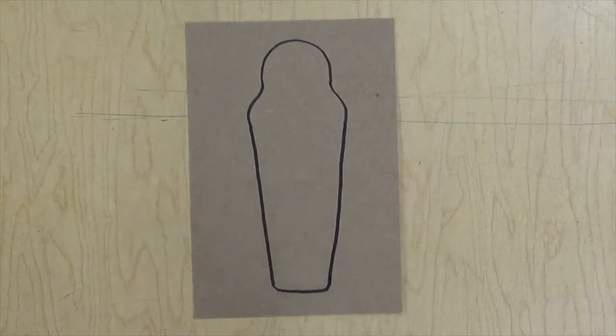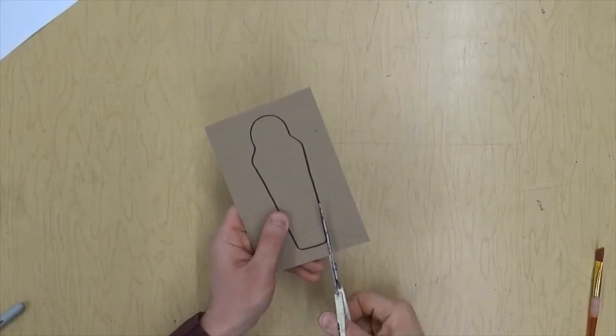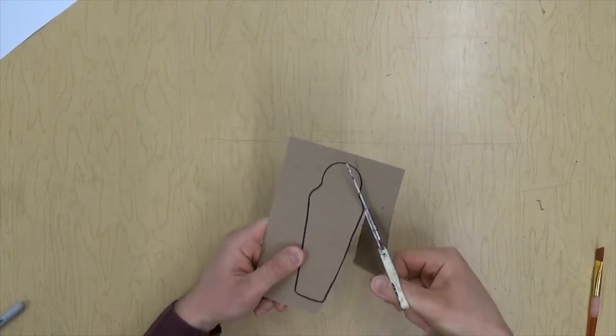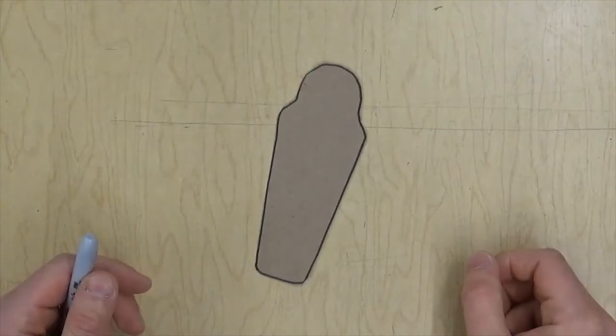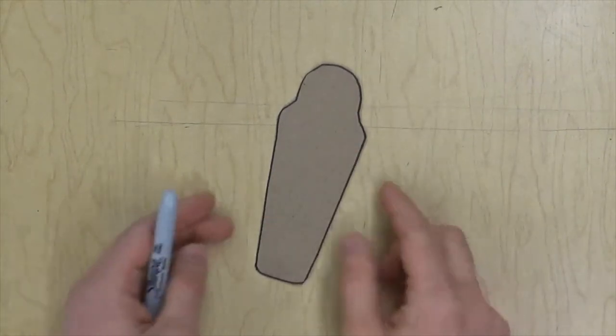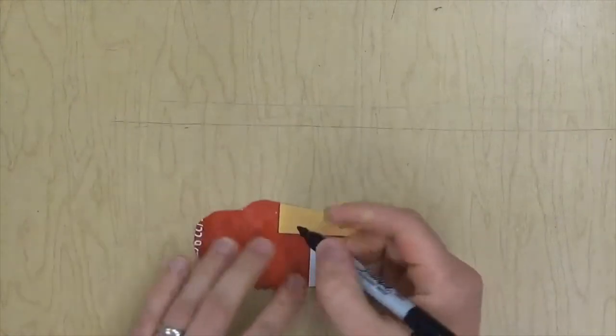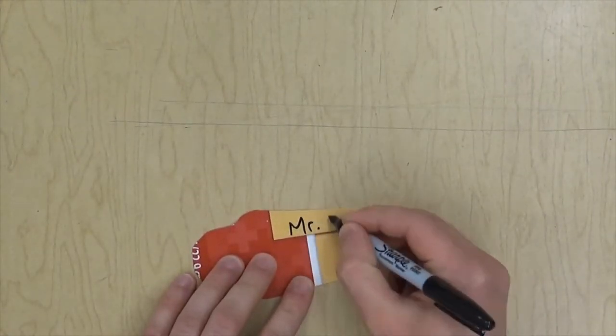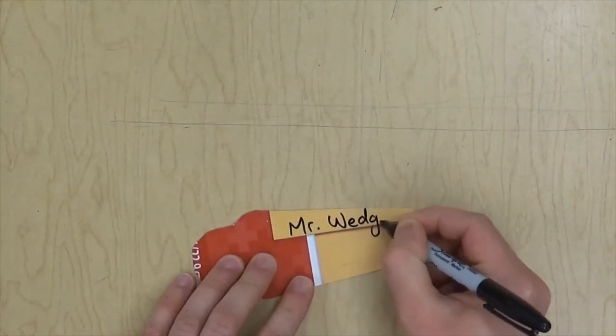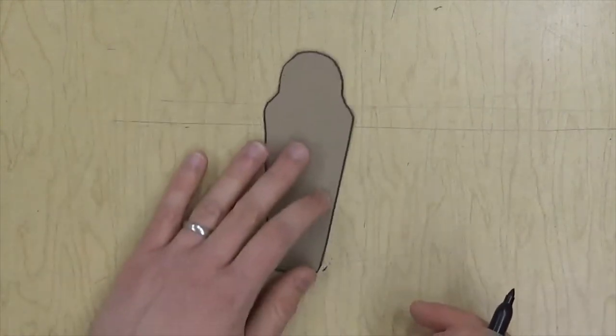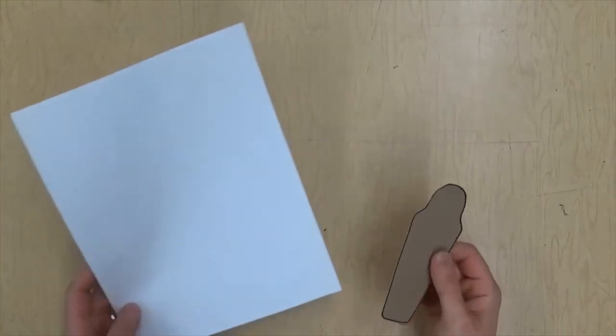Now that I have that, I can cut it out. Once I've cut out the shape of my sarcophagus, I can flip it over. I'm going to write my name on the back and also my class code, then flip it back over.